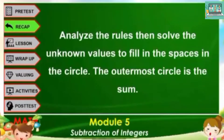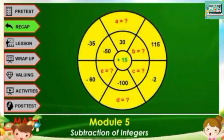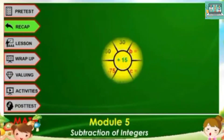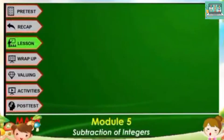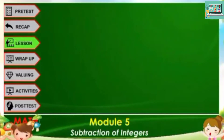Let's have a recap to check your mastery about the previous lesson. Analyze the rules then solve the unknown values to fill in the spaces in the circle. The outermost circle is the sum. You have 30 seconds to answer the activity. In this self-learning module lesson, we will be exploring how to subtract integers. The step-by-step process of subtracting integers is included in this self-learning module. Enough examples and exercises are presented to facilitate learning.